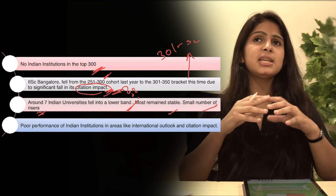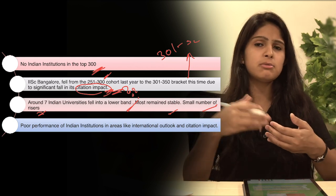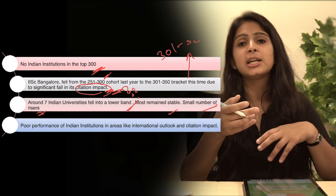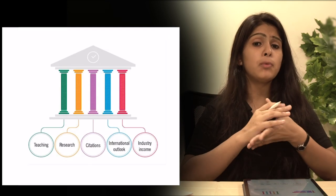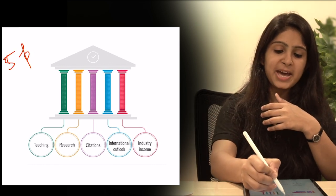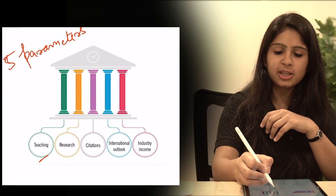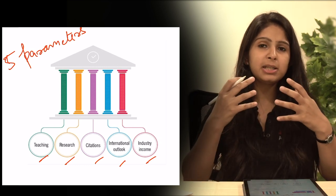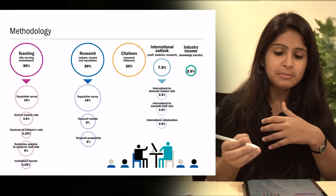So now we know what methodology or what process these rankings use to calculate and rank universities. Now let's look at those methodologies. Times Higher Education world university ranking decision is based on 5 parameters.